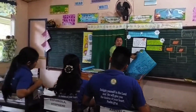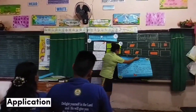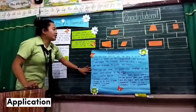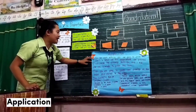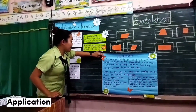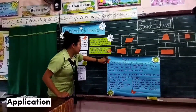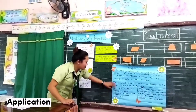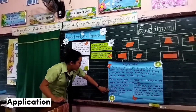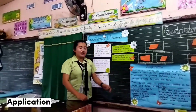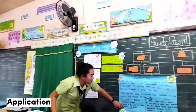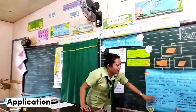Okay, so for our next activity, you are going to draw a scenario in which all the quadrilaterals are present. I will provide the materials and give you 10 minutes to finish the task. Then you are going to paste your drawings on the board and discuss to the class. The criteria: creativity — 5 points; relevance of the topic — 3 points; cleanliness — 2 points; total of 10 points. These points will be added to your previous points, and whoever gets the highest points will receive an additional 5 points on the periodical exam.